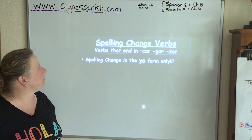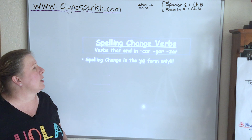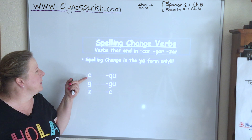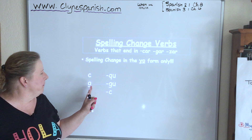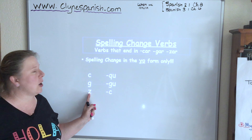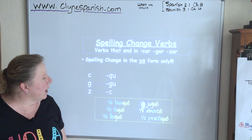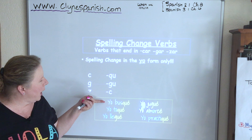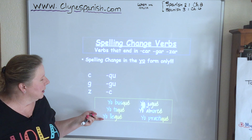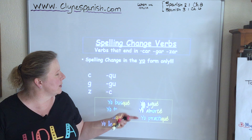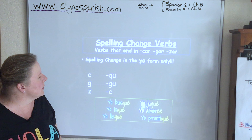Now we have CAR, GAR, and ZAR verbs. These are tricky. Remember that the spelling change only occurs in the yo form. If it's a CAR verb, the C changes to QU. If it's a GAR verb, the G changes to GU. And if it's a ZAR verb, the Z changes to C. Everything in the yo form keeps the É for the accent. So: BUSCAR → yo BUSQUÉ. TOCAR → TOQUÉ. LLEGAR — to arrive → LLEGUÉ. JUGAR → JUGUÉ. ALMORZAR — to have lunch → ALMORCÉ. And PRACTICAR — so as soon as you see the verb ends in CAR, GAR, or ZAR, you know you're dealing with this family.